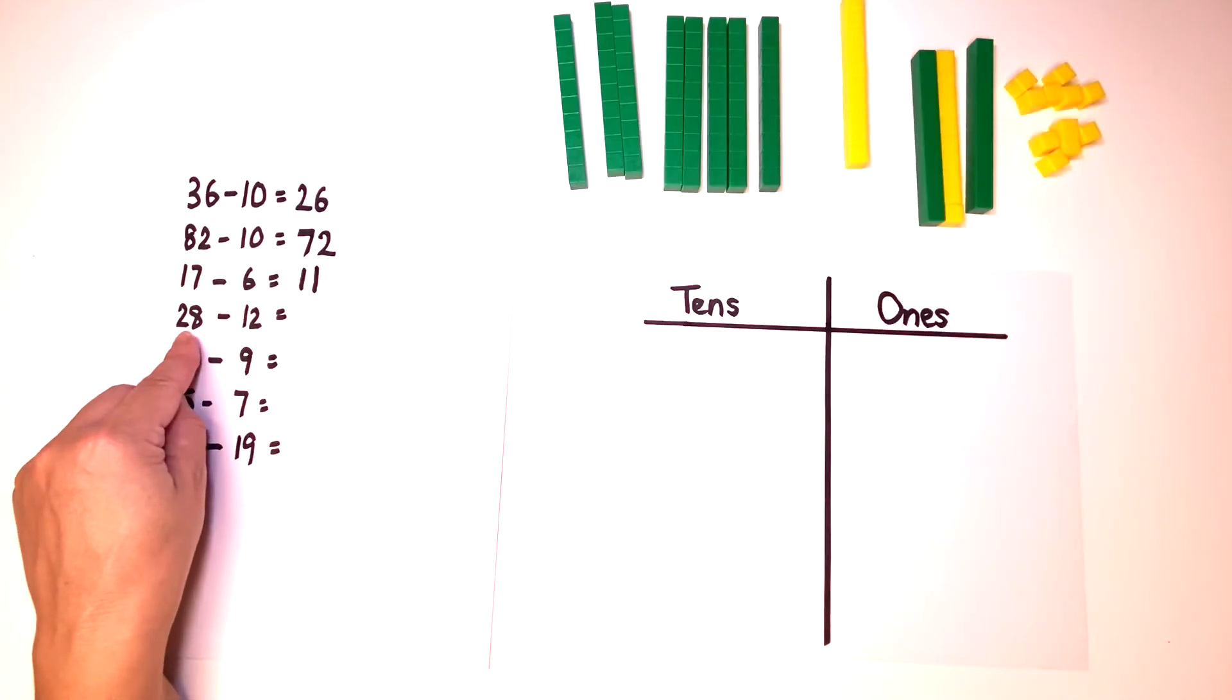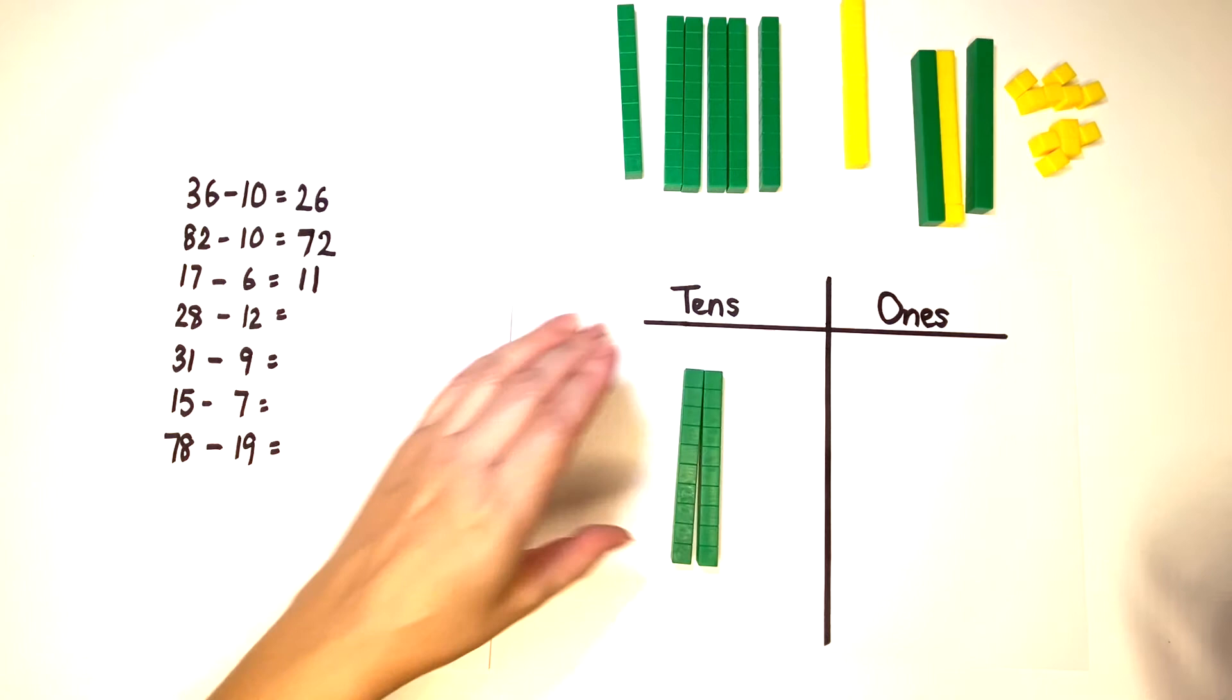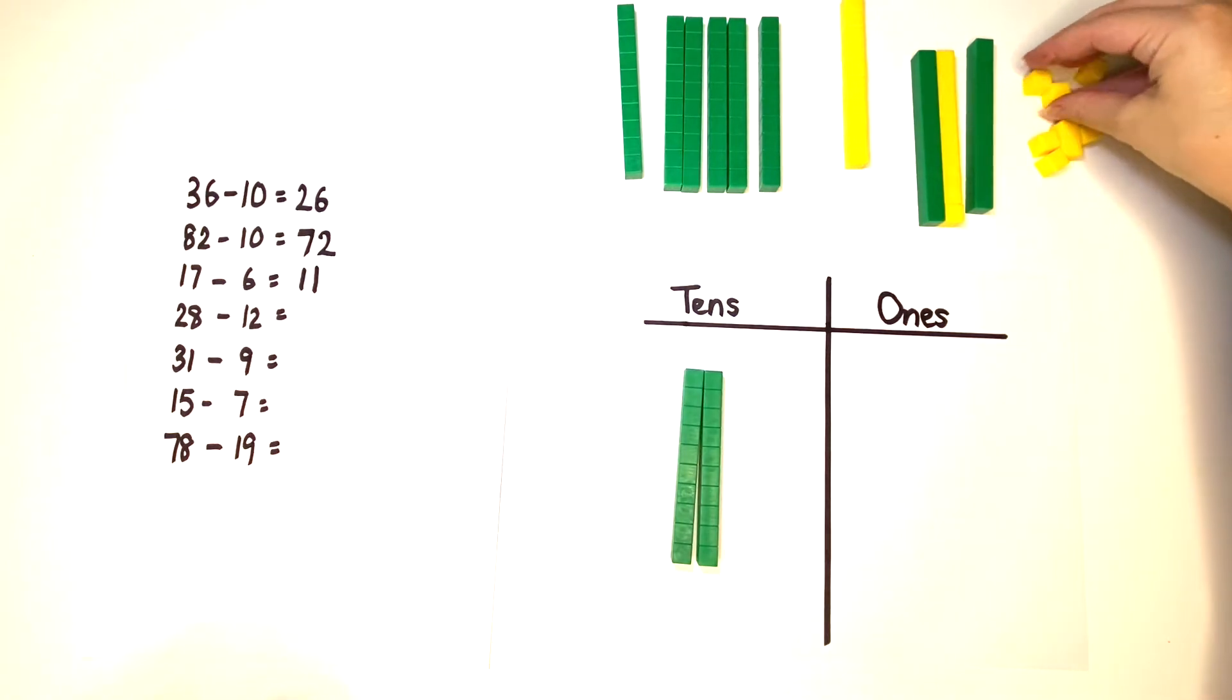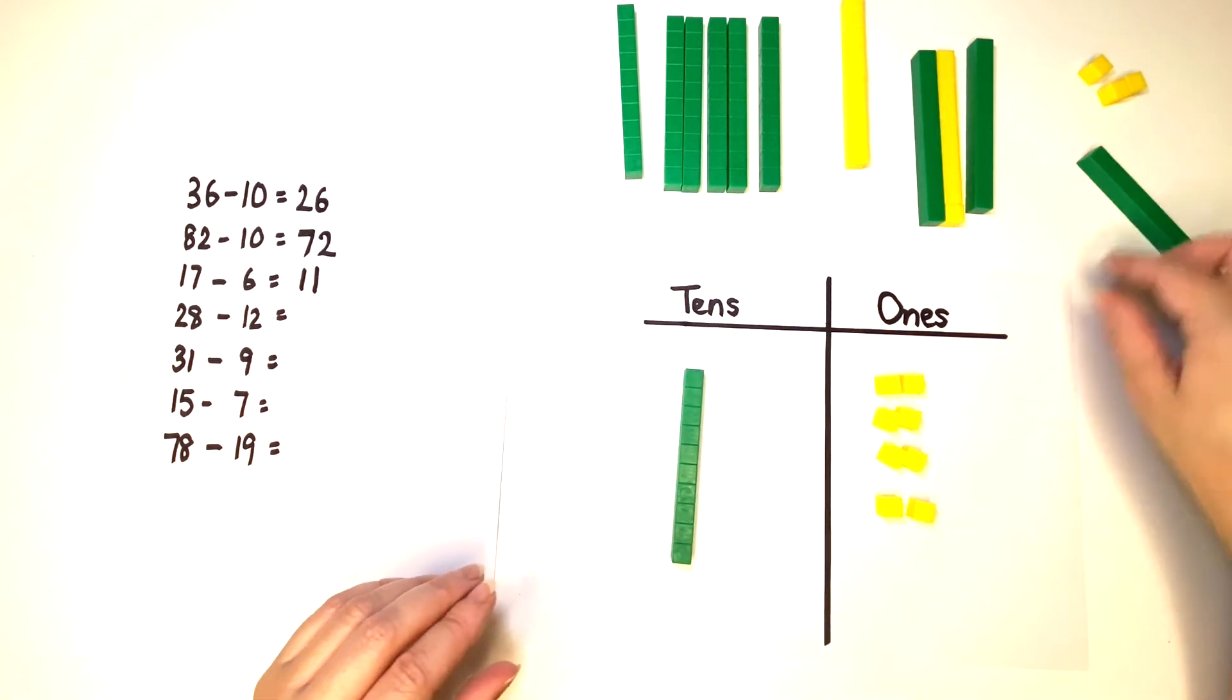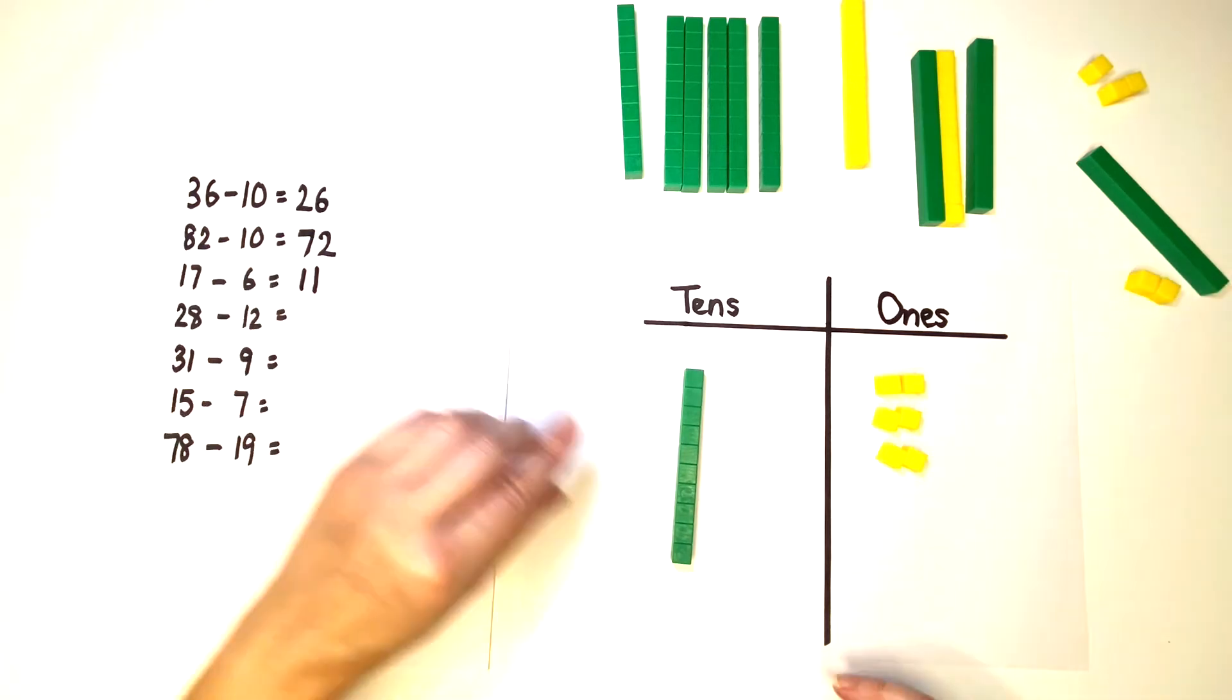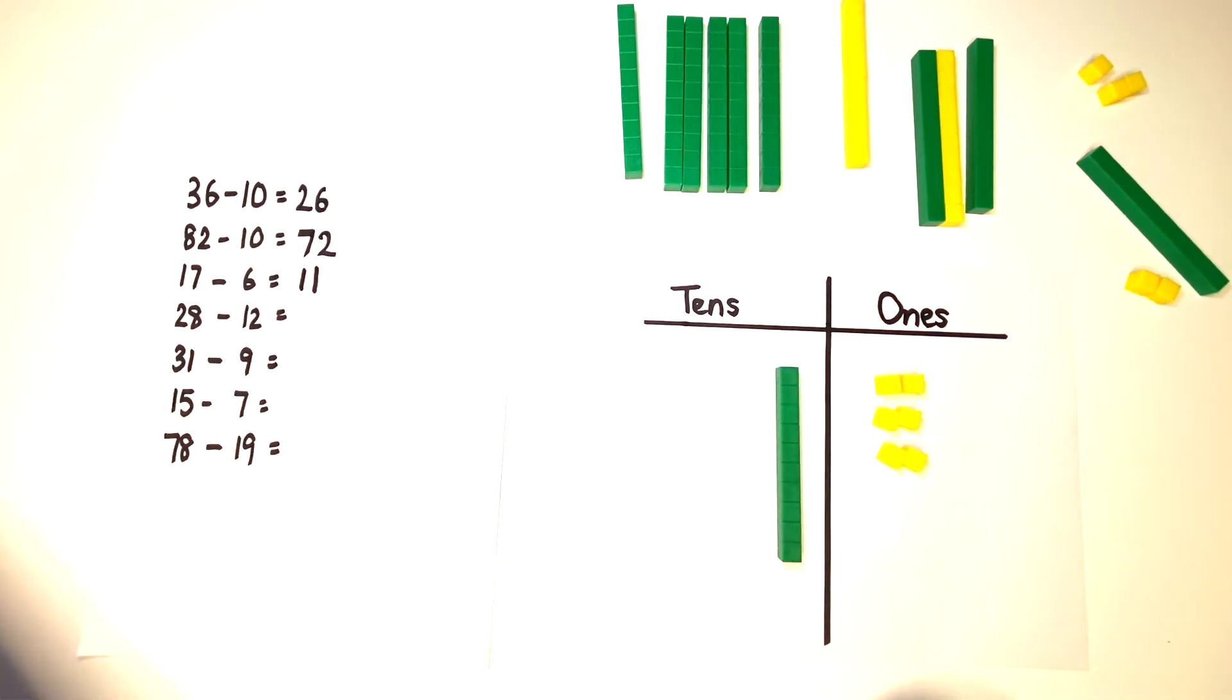Our next number sentence is 28 minus twelve. Twenty, two, four, six, eight. And I need to take twelve away. So I'm going to take my ten and my two. And we're left with one ten, two, four, six and six ones.